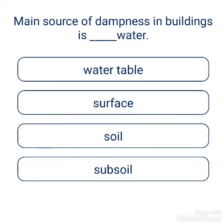Question: The main source of dampness in buildings is what type of water? Options: water table, surface, soil, subsoil. The answer is subsoil water.